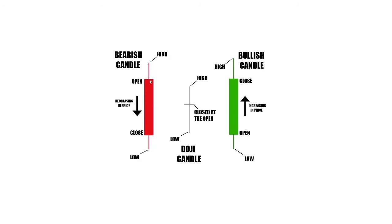The main part of the candle on both the bullish and bearish candle is called the real body. This is going to show you the upward or downward price movement — where the price opened and where the price closed. On the bullish candle, at the beginning of the five minutes the price opens here, and at the end of the five minutes it closes here.